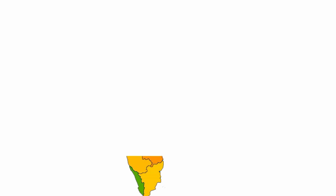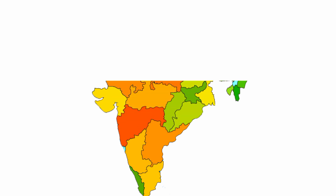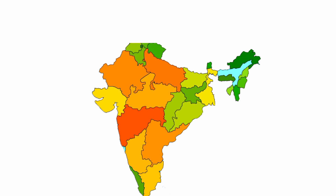The State Election Commission conducts elections of local bodies — Panchayat Raj and urban local bodies. The Governor appoints the State Election Commissioner under Article 243K and Z-A. In Karnataka, the State Election Commission has been formed under Article 308 of the Karnataka Grama Swaraj and Panchayat Raj Act of 1993, and it conducts elections of local bodies.